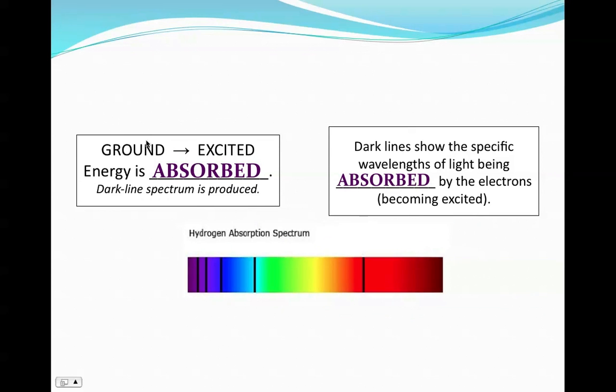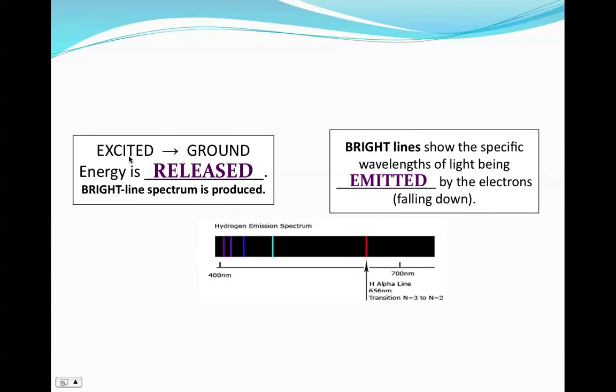So just to review, when we go from the ground to the excited state, energy is absorbed. So we say that a dark-line spectrum is produced. These wavelengths of light are the wavelengths that the hydrogen electrons are absorbing in order to go up to the excited state. These dark lines show the specific wavelengths that are being absorbed as the electrons become excited. Now remember this is unstable, so when the electrons go from the excited back down to the ground state, energy is released. And this bright-line spectrum is produced. The same wavelengths that were absorbed are now getting released by the electrons, and we can see it by the different colors of light and wavelengths on an emission spectrum. So the bright lines show the specific wavelengths of light being emitted by the electrons as they fall back down to a lower energy level.